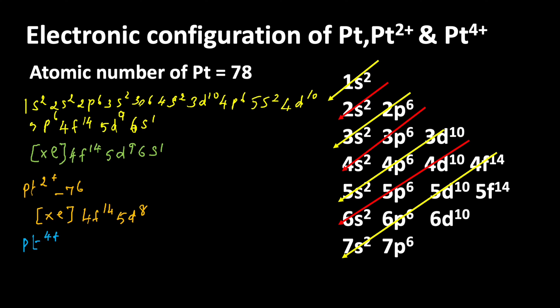Platinum 4+ ions are formed when platinum neutral atom loses 4 electrons. So 78 minus 4 equals 74. We can write the condensed electronic configuration: xenon 4f¹⁴. During the formation of platinum 4+, platinum loses 1 electron from s orbital and 3 electrons from d orbital. So now 5d⁹ becomes 5d⁶.